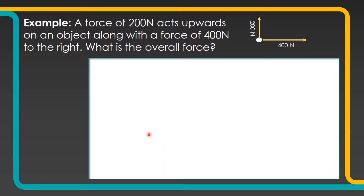Here's an example for us to look at. We've got a force of 200 newtons acting upwards on an object, along with a force of 400 newtons going to the right. We have to work out what the overall resultant force acting on the object is.